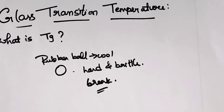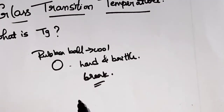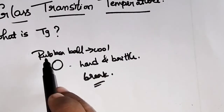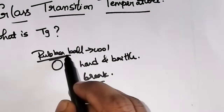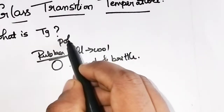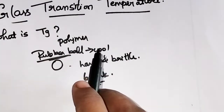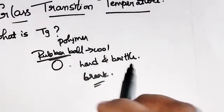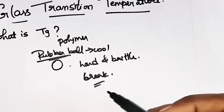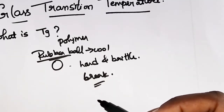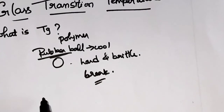So this temperature below which the material — we know that a rubber ball is made up of a polymer material — below a certain temperature the polymer becomes hard and brittle, and above that temperature the polymer will be soft and flexible. That temperature we call the glass transition temperature.